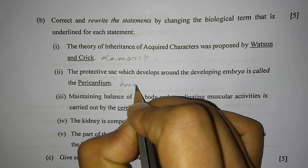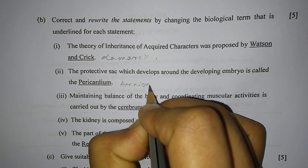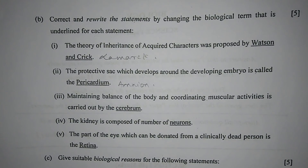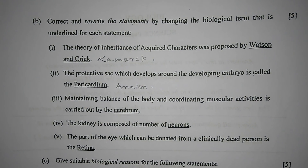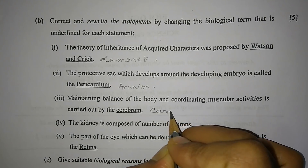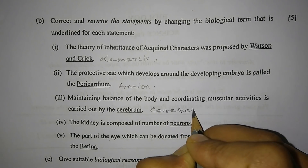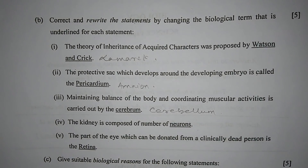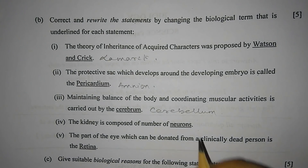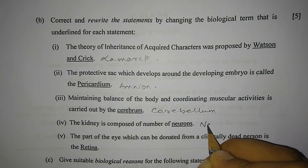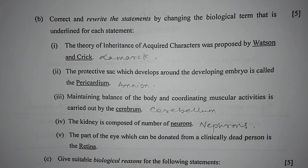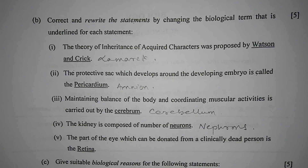Number 3 — maintaining balance of the body and coordinating muscular activity is carried out by the cerebrum. No, it is the cerebellum. Number 4 — the kidney is composed of a number of nephrons. Number 5 — the part of the eye which can be donated from a clinically dead person is the cornea.